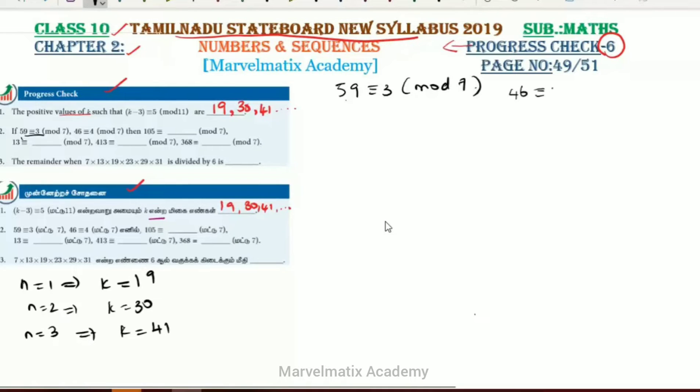Next, 46 congruent to 4 mod 7. Using the 7 times table, 46 divided by 7: 7 times 3 is 21, 7 times 4 is 28, 7 times 5 is 35, 7 times 6 is 42. The remainder is 4.